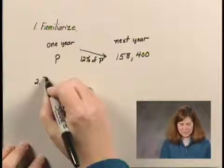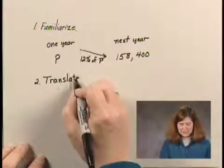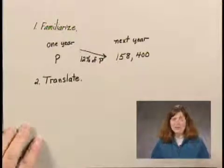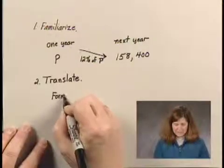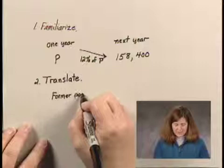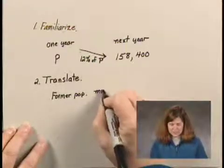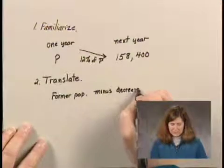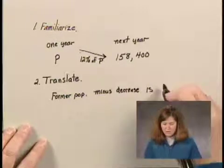And that's the second step in the process, which is to translate the problem to mathematical language. When we translate this problem to mathematical language, we can think of it in this way. Let's call it the former population minus the decrease is, and we can call this the new population.